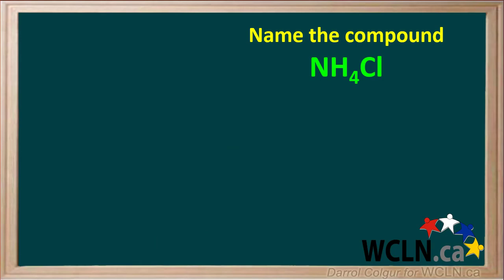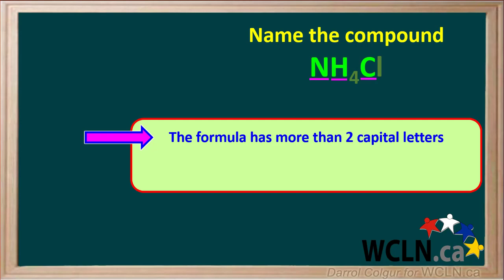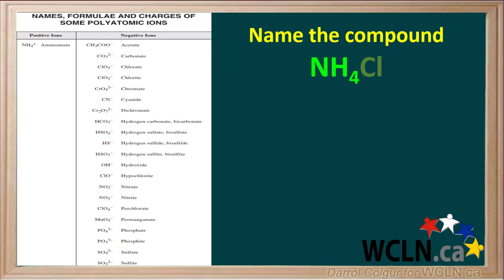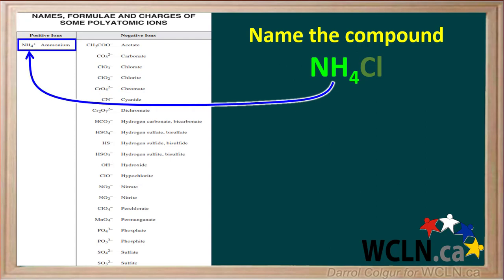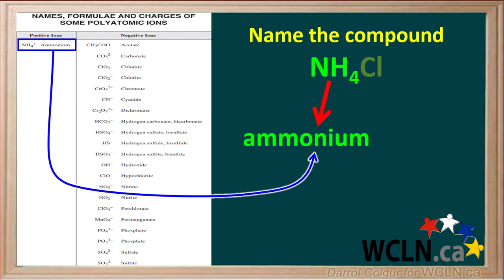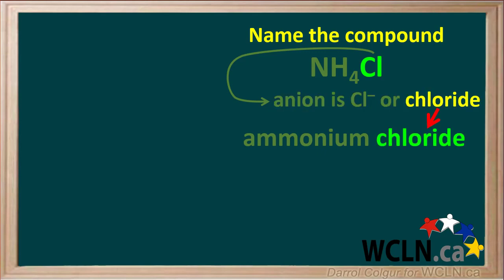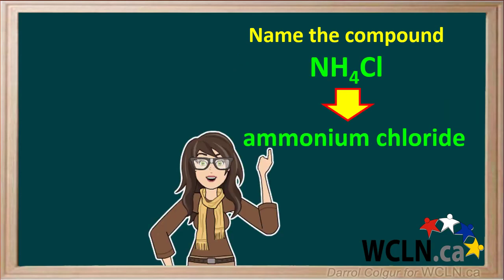We're asked to name the compound with the formula NH₄Cl. We notice this formula has more than two capital letters — N, H, and Cl — meaning the compound contains more than two elements, so it must contain at least one polyatomic ion. Looking on the table of polyatomic ions, we find NH₄⁺, which is called ammonium. A polyatomic ion does not change its name, so the first part of the name is just ammonium. The anion is the single non-metal Cl with a charge of negative one. A single non-metal in a compound ends with the letters -ide, so this is called the chloride ion. The final name for this compound is ammonium chloride.